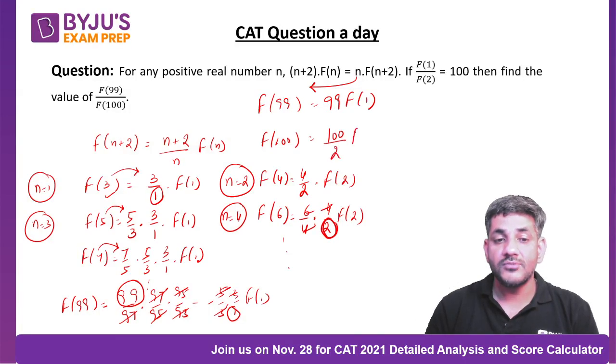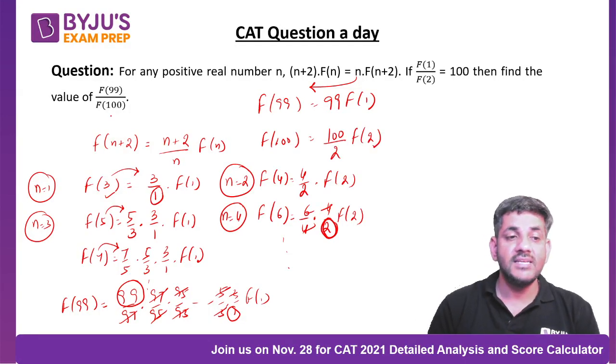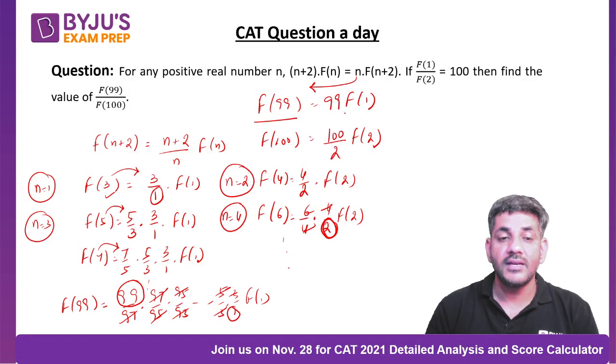The question is asking me the ratio of these two, and the ratio of these two is equal to the ratio of these two. f(1) divided by f(2) is already given to us as 100. So when this 100 will cancel out with this 100, and this 2 will go above, I will have f(99)/f(100) as 99·2, that is 198.